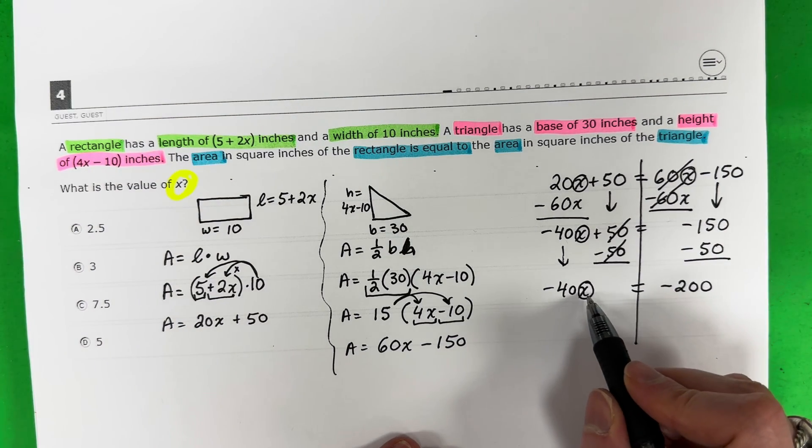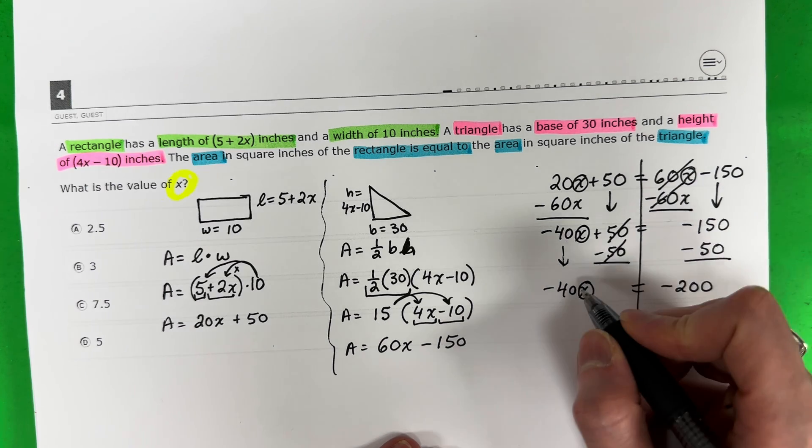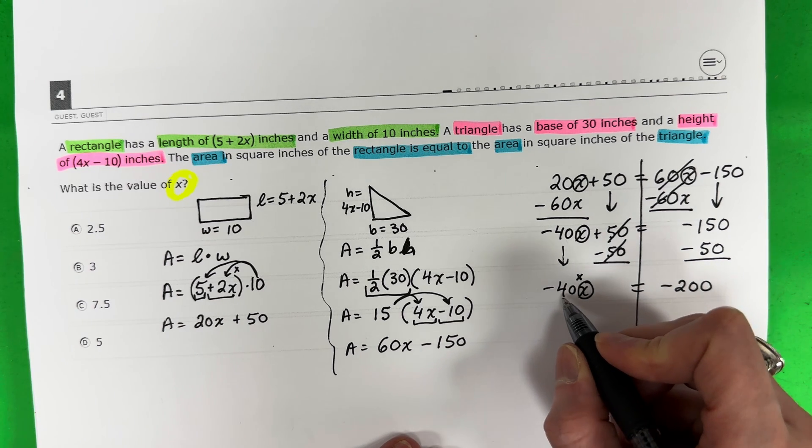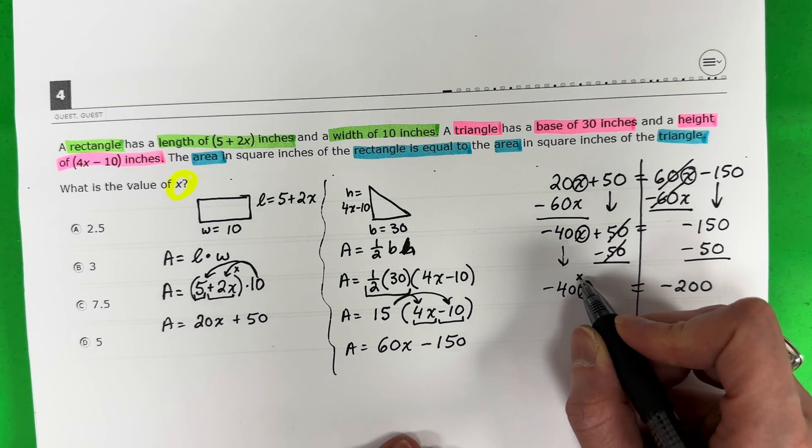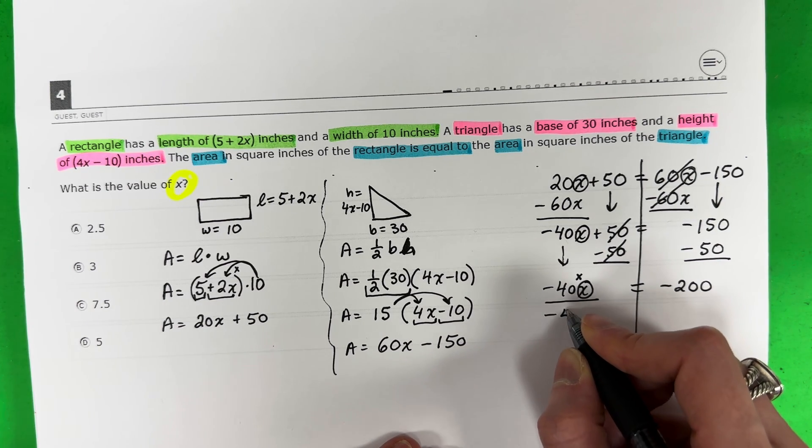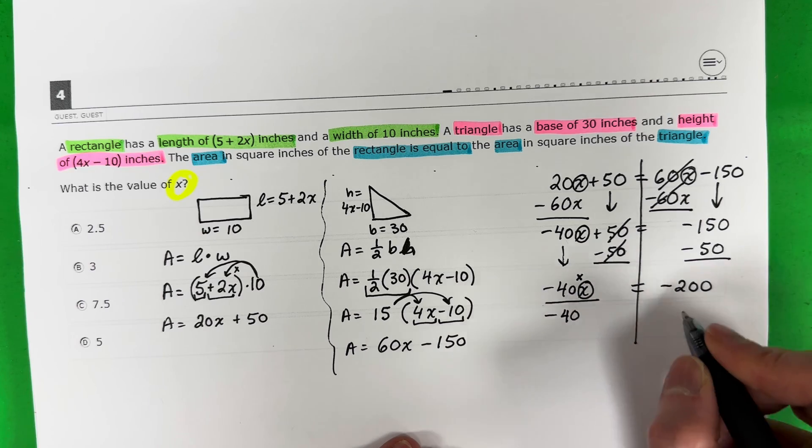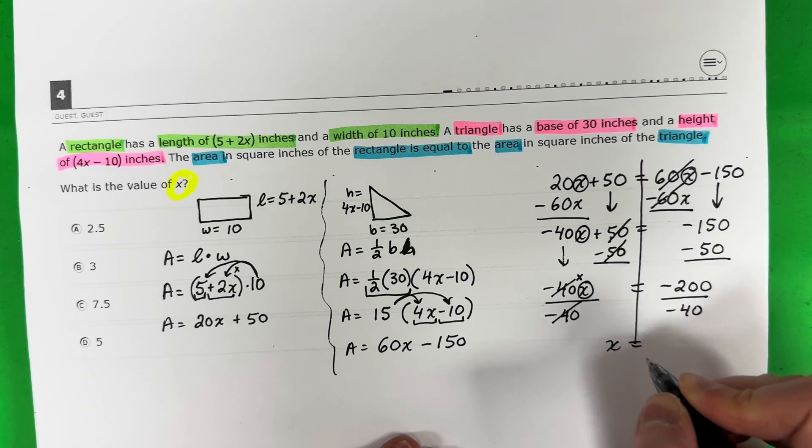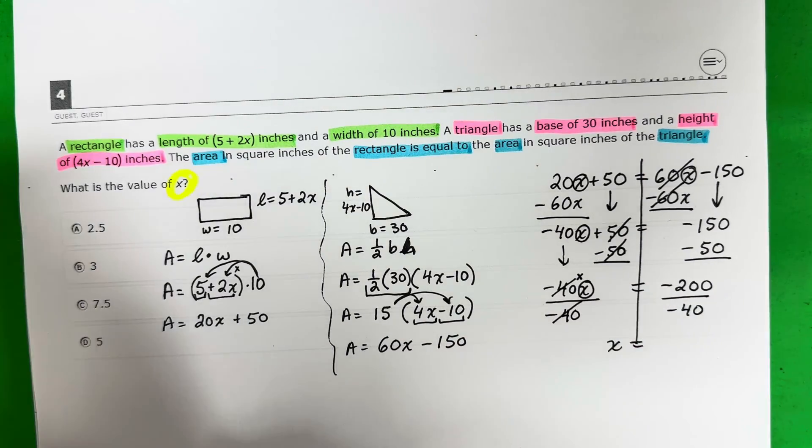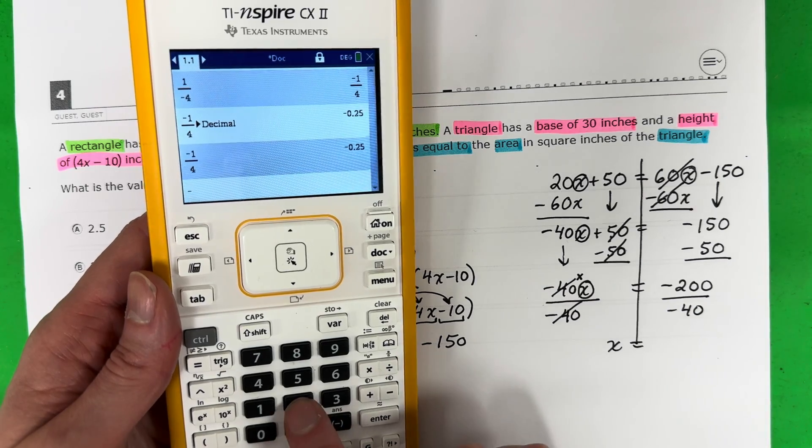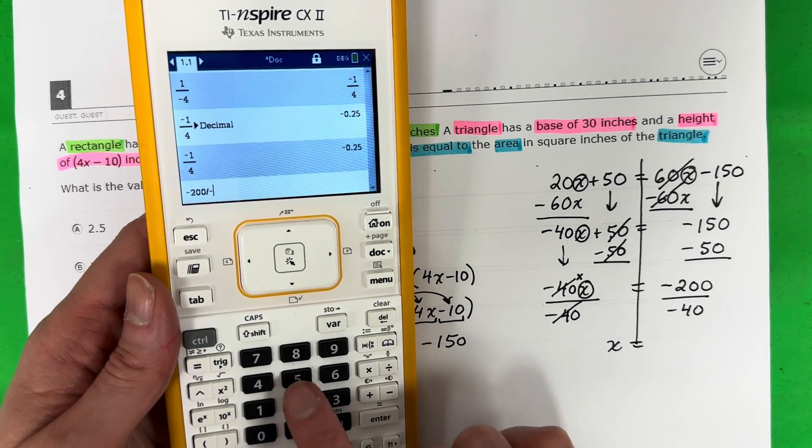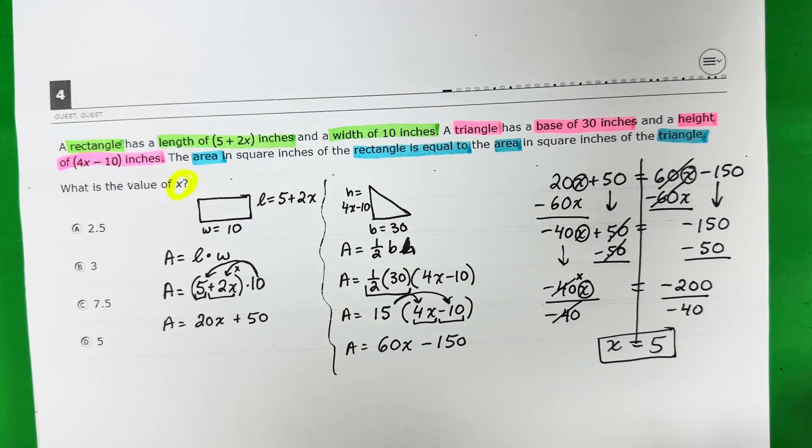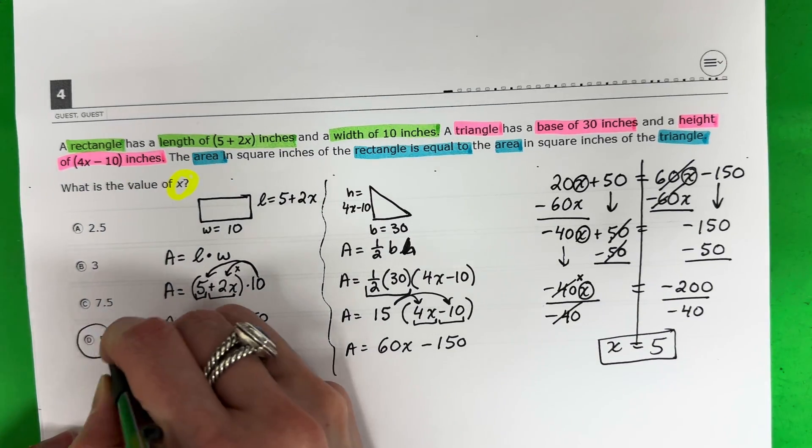Now I want the x alone, but it's not alone. I have negative 40. If there's no sign in the middle, it's multiply. This is multiplication. Right now, this is negative 40 times x. The opposite of multiply is divide. Negative 40. So whenever you divide, keep the same sign. Divided by negative 40. This cancels. Copy x equals. And let's go ahead and just stick that in the calculator. Negative 200 divided by negative 40. 5. This is my x. So, what is the value of x? The value of x is 5.